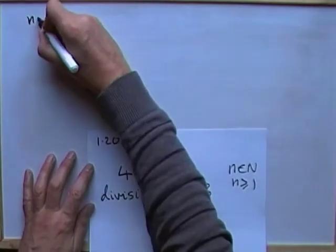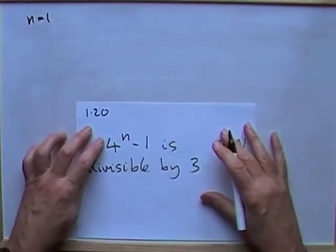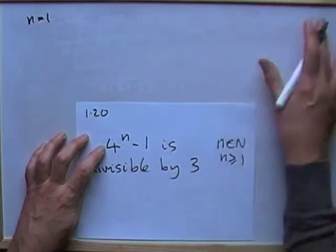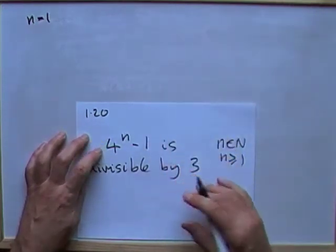Same as before. You start off with n equals 1. This time there's no left hand side, right hand side. So that's that part out of the window. You're going to have to do it all the way through yourself.